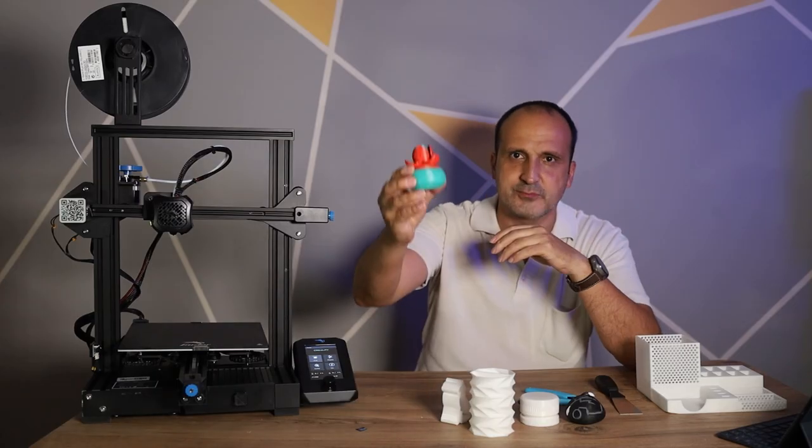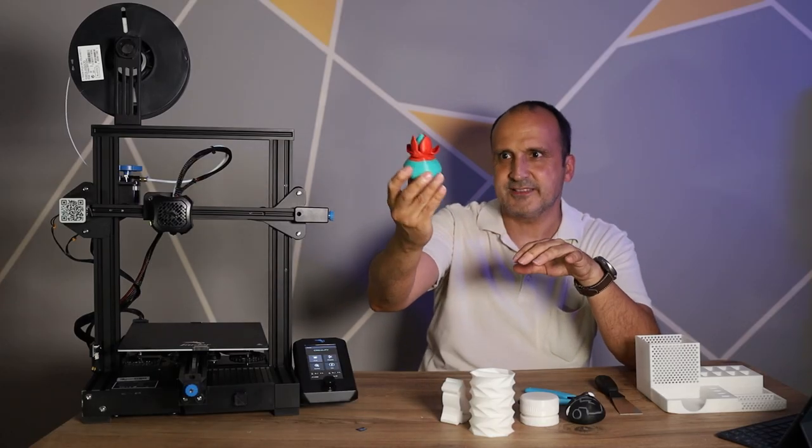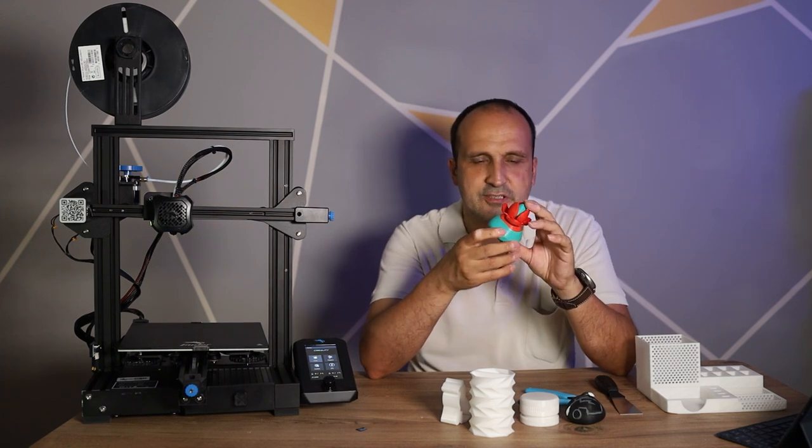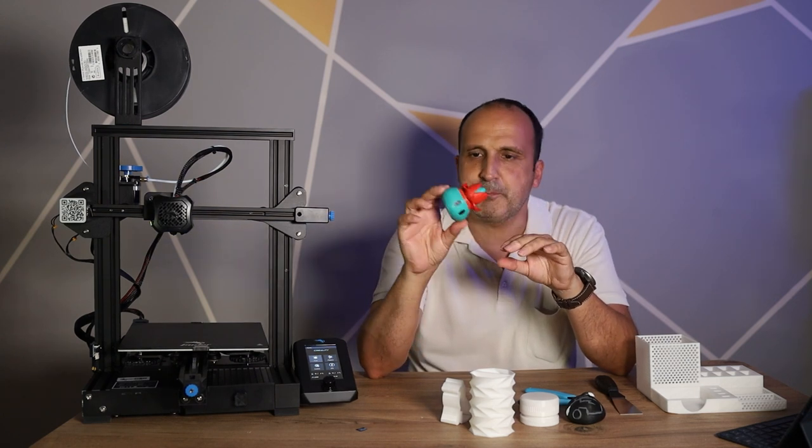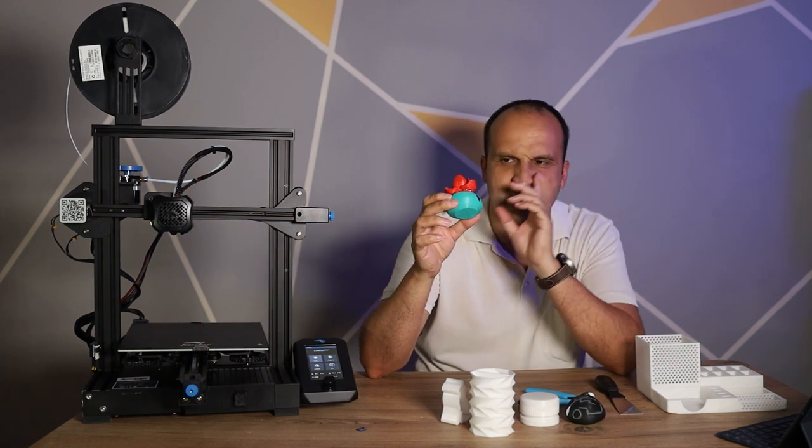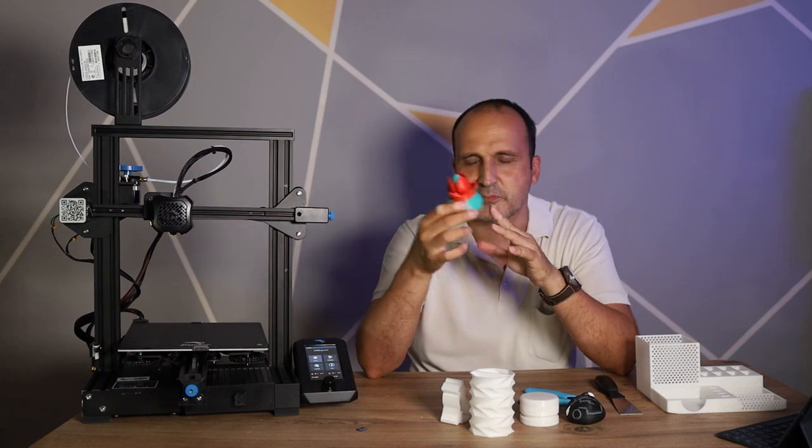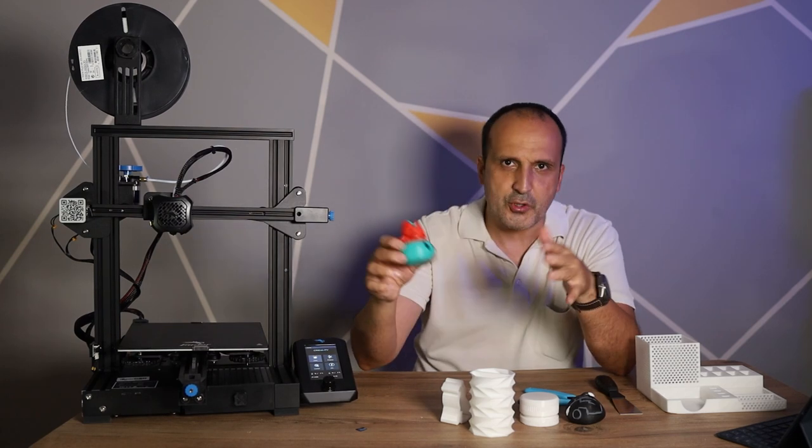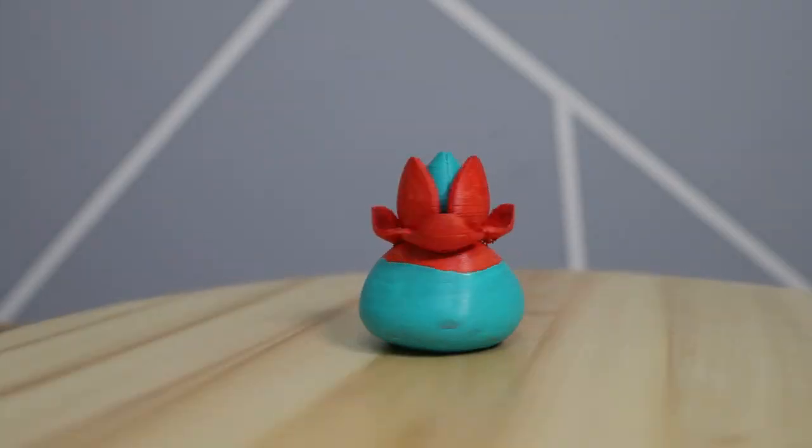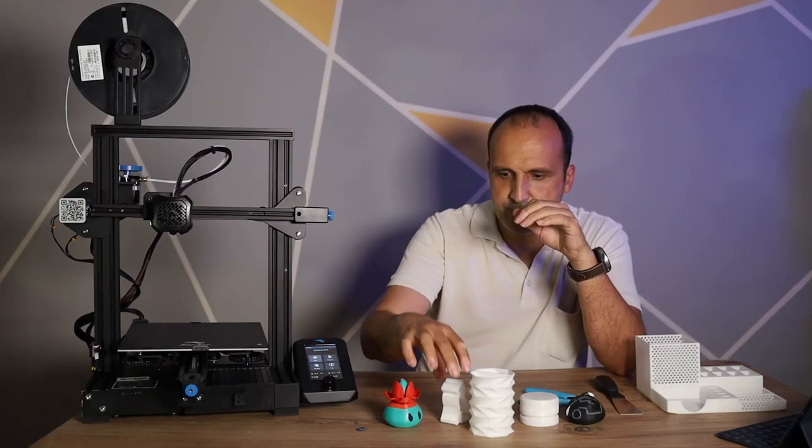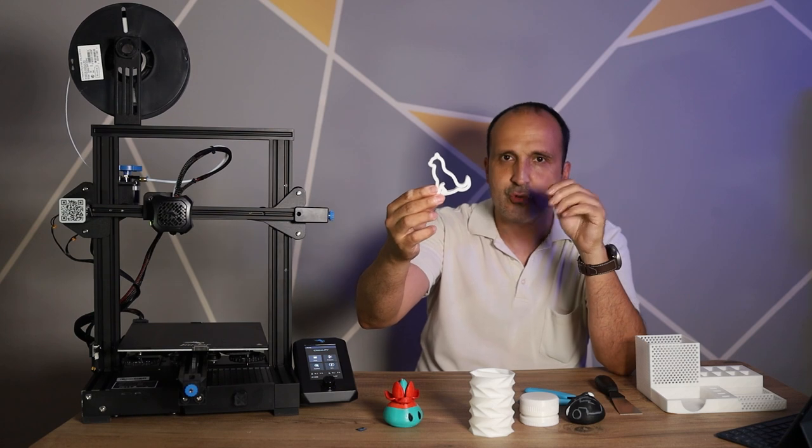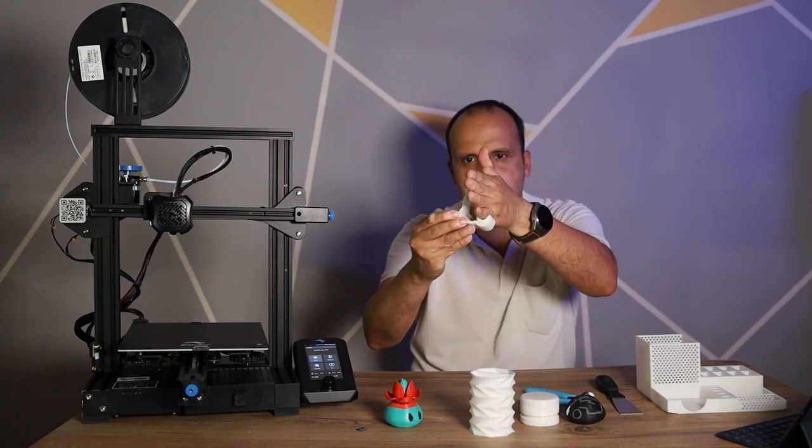Elde ettiğimiz sonuçlar da bu şekilde oldu. Mesela ben burada şöyle bir şey bastık. Bu arada bu boyanmış hali bu, bu da beyazdı. Kızım benim bunu boyadı. Bu Genshin Impact oyunundan bir karakter, küçük bir şey, orada olan bir yaratık galiba anladığım kadarıyla. İstediği gibi bir renge boyadı. Bu arada boyanabiliyor anladığınız gibi. Bunu basmak mesela 3 saat sürüyor. Mesela şöyle bir bu cep telefonu koyulacak bir ürün bu, telefon standı.